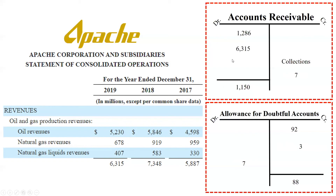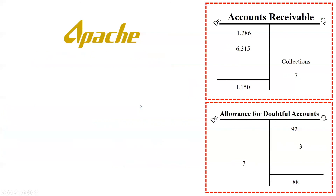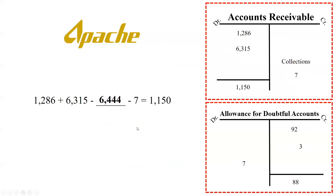With 6315 plugged in as revenue on account, we're down to one unknown: cash collected from customers. The t-account gives us this equation: 1286 (beginning balance) plus 6315 (revenue on account) minus collections minus 7 (defaults) equals 1150 (ending balance). Solving for collections gives 6,444 million. So the answer to how much cash Apache collected from its customers during the year is 6,444 million — that's how you convert financial statements into the t-accounts behind the scenes.